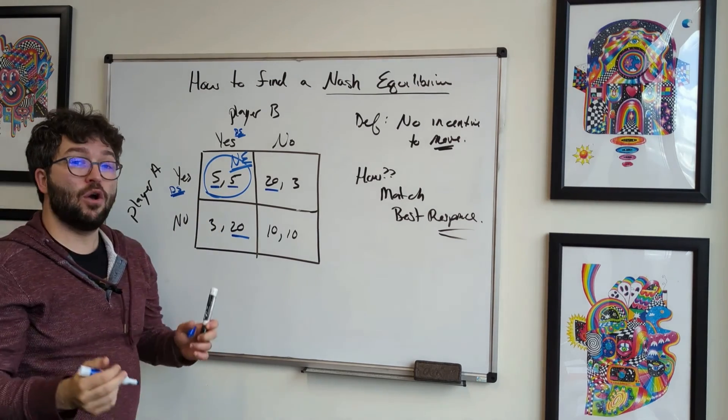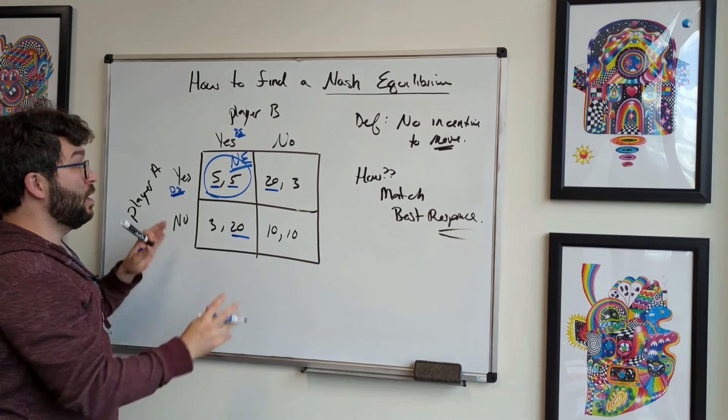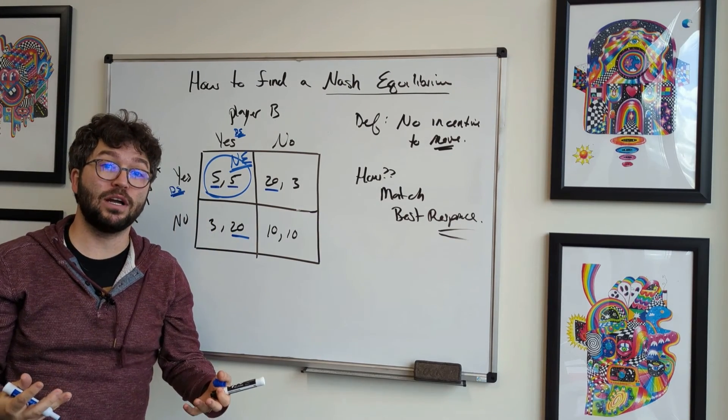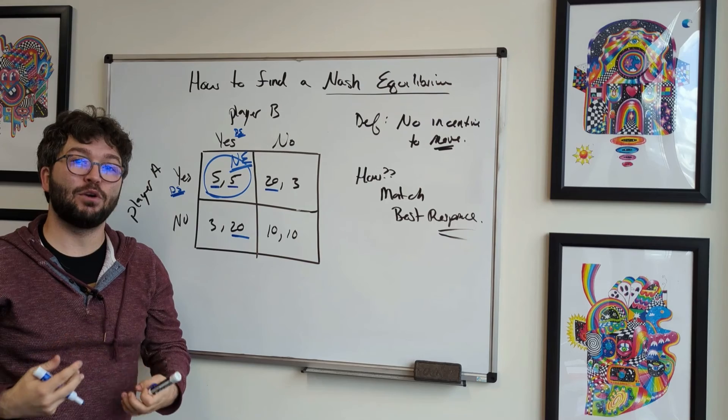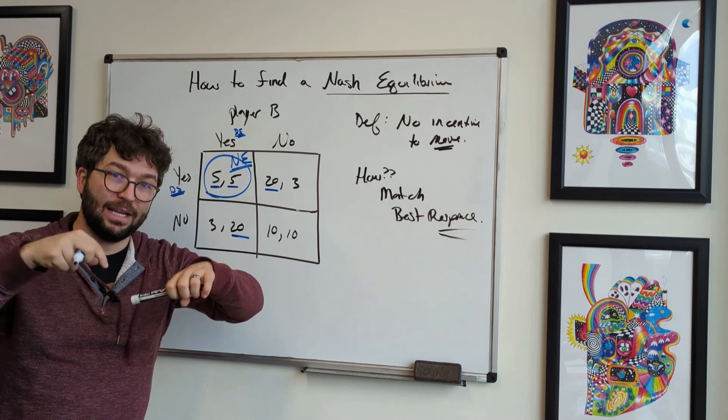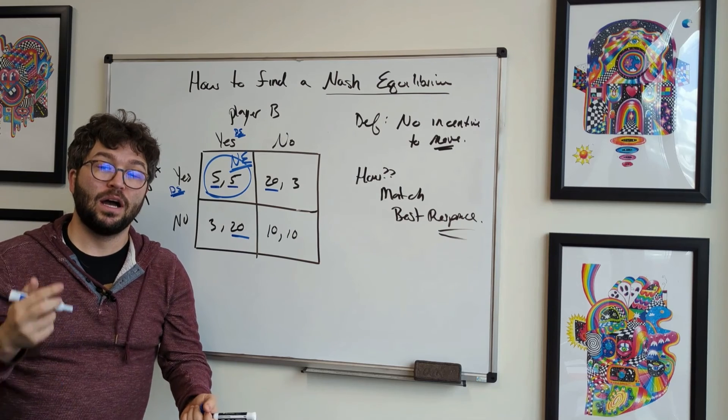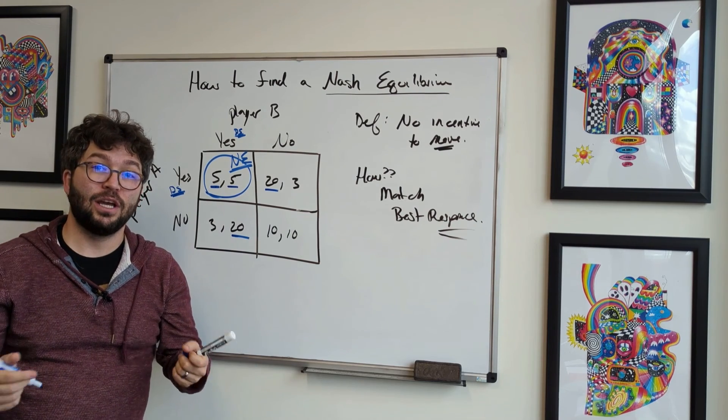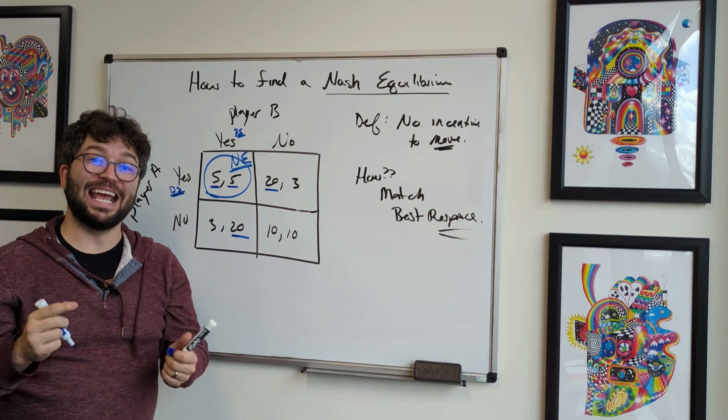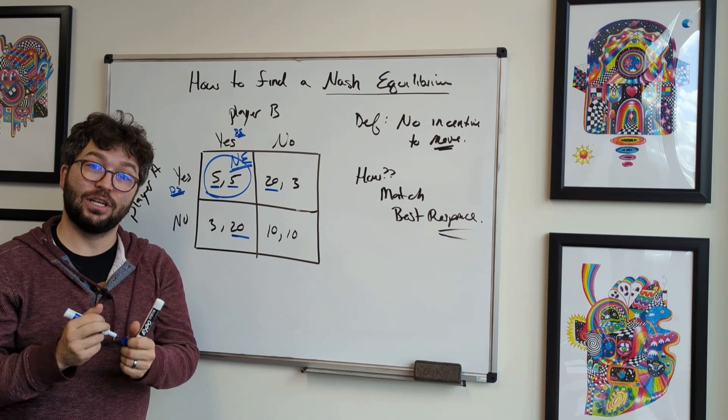So this video showed a Nash equilibrium where we only had one. Could we have multiple Nash equilibria? We can. I'll make sure I make a video about that too and link it below in the comments. If you have any questions, feel free to let me know. Again, subscribe and like to this page and reach out to TierneyEducation.com if you ever need any help with economics or higher education in general.